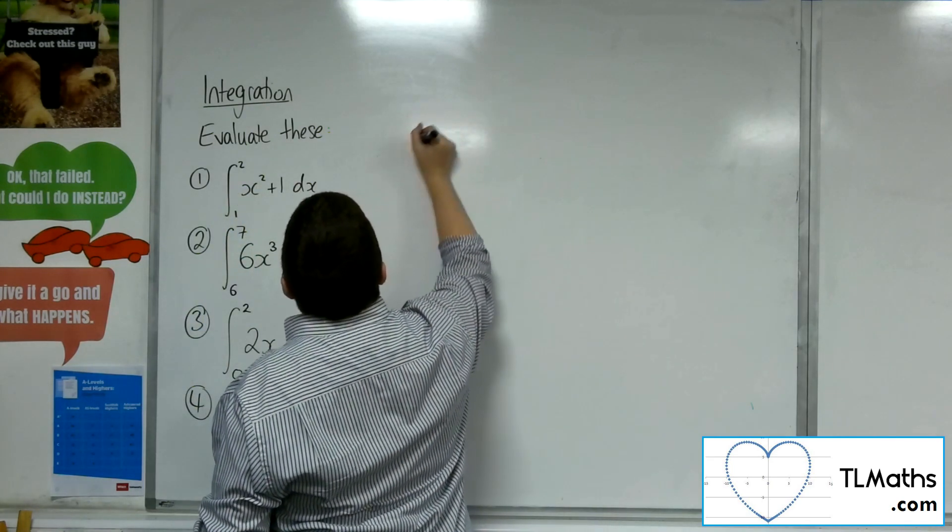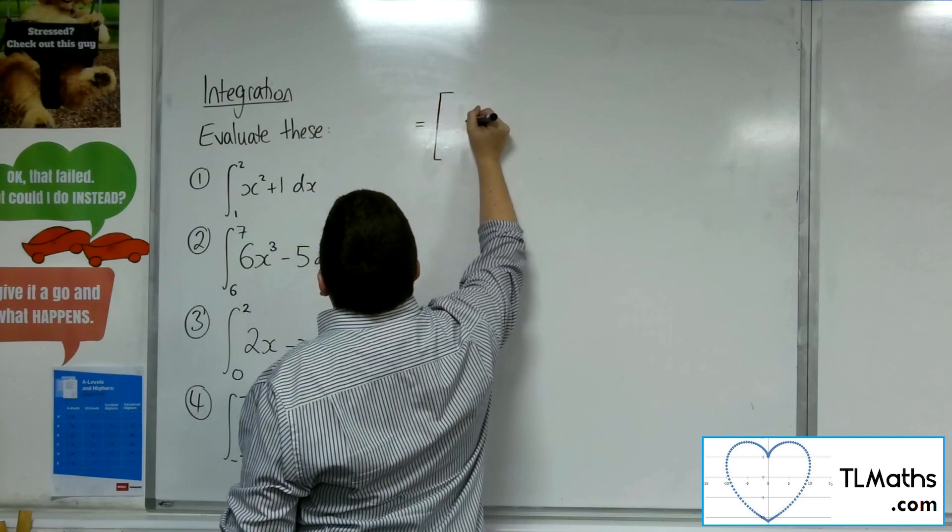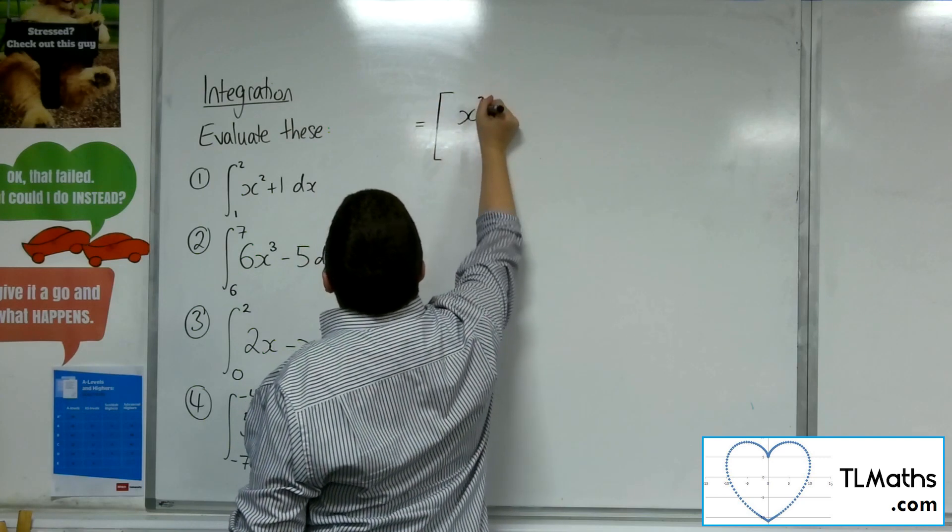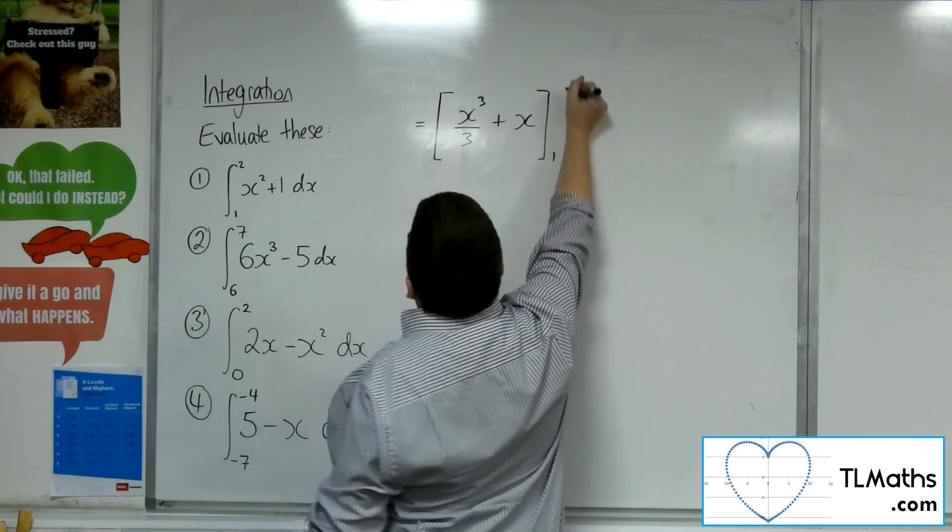So our next line of working will be square brackets. Add 1 to the power, divide by the new power, and the 1 integrates to x. We don't have a constant of integration.